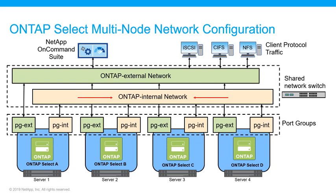Throughput and latency are important. The internal network carries ONTAP intra-cluster traffic such as High Availability Interconnect or HA Interconnect and RAID Sync Mirror or RSM. The Deploy VM automatically generates and assigns the link local IP addresses for the internal network interfaces during cluster creation.